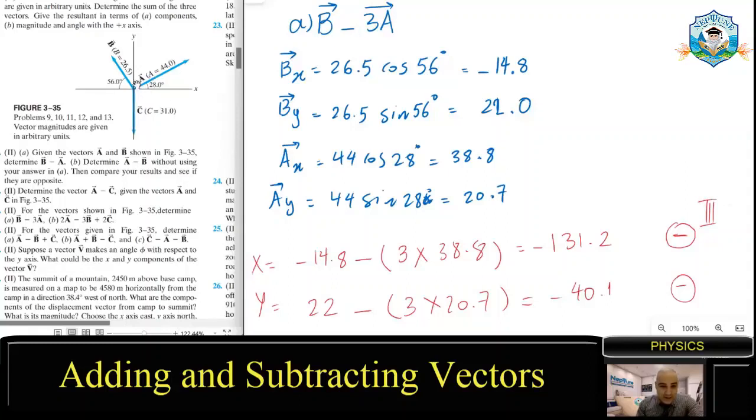So that means we are in quadrant three. The vector, this subtraction answer, is in quadrant three, that resultant. And what is the angle? So the angle is tangent inverse of Y/X: Y is -40.1 over X, -131.2. 16.99, so it's 17 degrees.